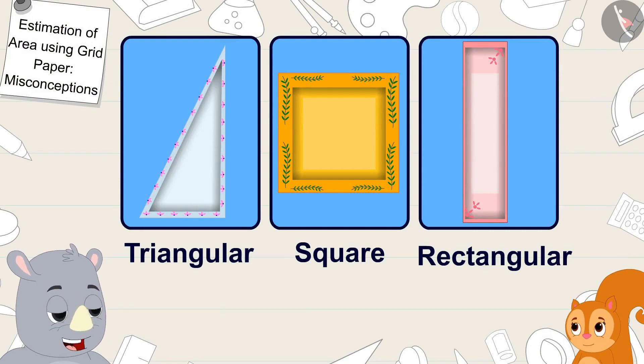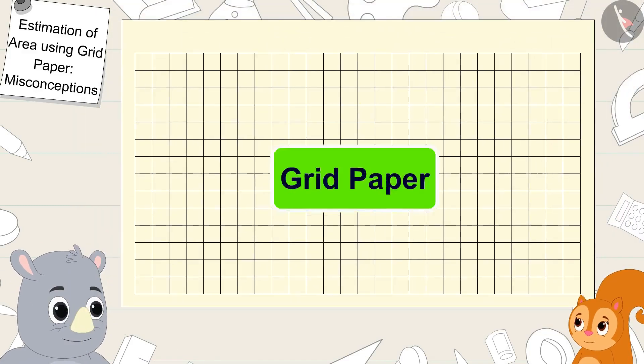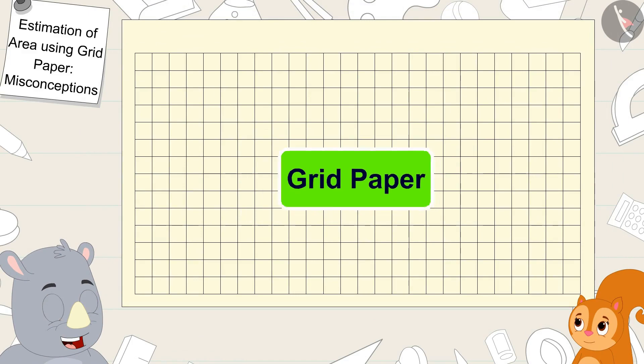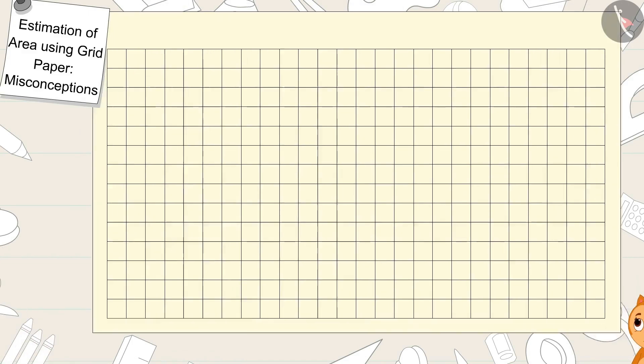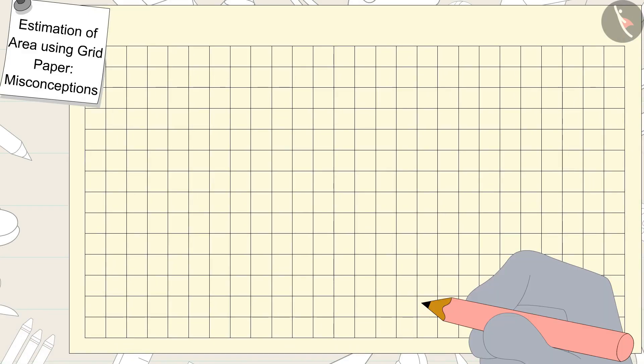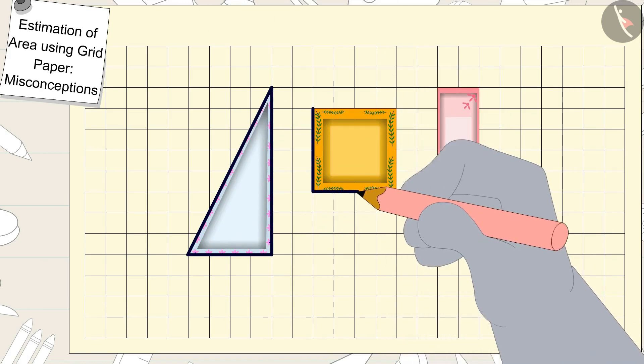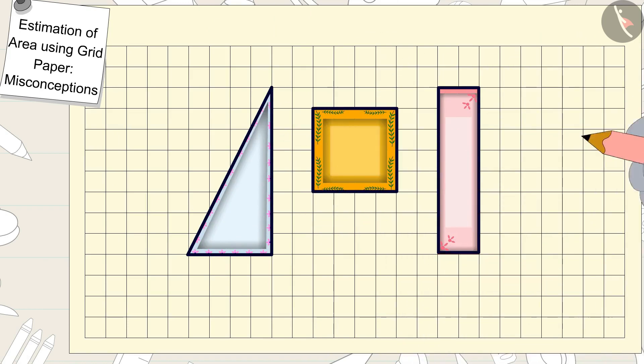Gaggoo laughed and said, no Chanda, come let me explain this to you using this grid paper. After saying this, Gaggoo used a pencil to trace the outlines of the three plates onto the grid paper.